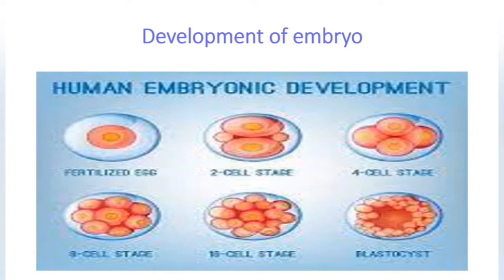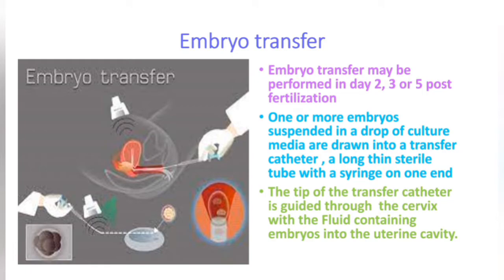Embryo transfer may be performed on day two, three, or five post-fertilization. One or more embryos suspended in a drop of culture media are drawn into a transfer catheter — a long, thin sterile tube with a syringe on one end. The tip of the catheter is guided through the cervix, delivering the embryos into the uterine cavity.